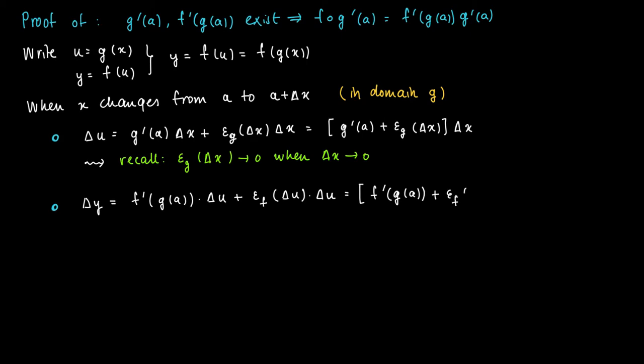We do the same thing, we take out the common term Δu. So we get the term [f'(g(a)) + ε_f(Δu)]Δu. Recall that this function ε_f has the following property: when Δu goes to zero, then ε_f(Δu) goes to zero.